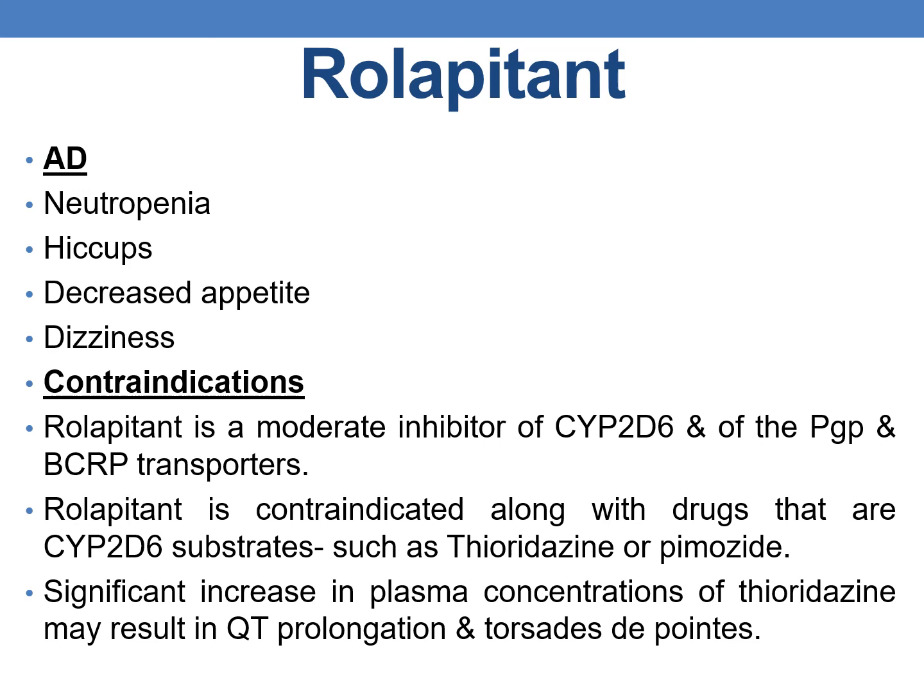Adverse effects of Rolapitant include neutropenia, hiccups, decreased appetite, and dizziness. Rolapitant is a moderate inhibitor of CYP2D6 and P-glycoprotein and BCRP transporters, and is contraindicated with CYP2D6 substrates such as thioridazine or pimozide, as significant increases in plasma concentrations of thioridazine may result in QT prolongation and torsades de pointes.